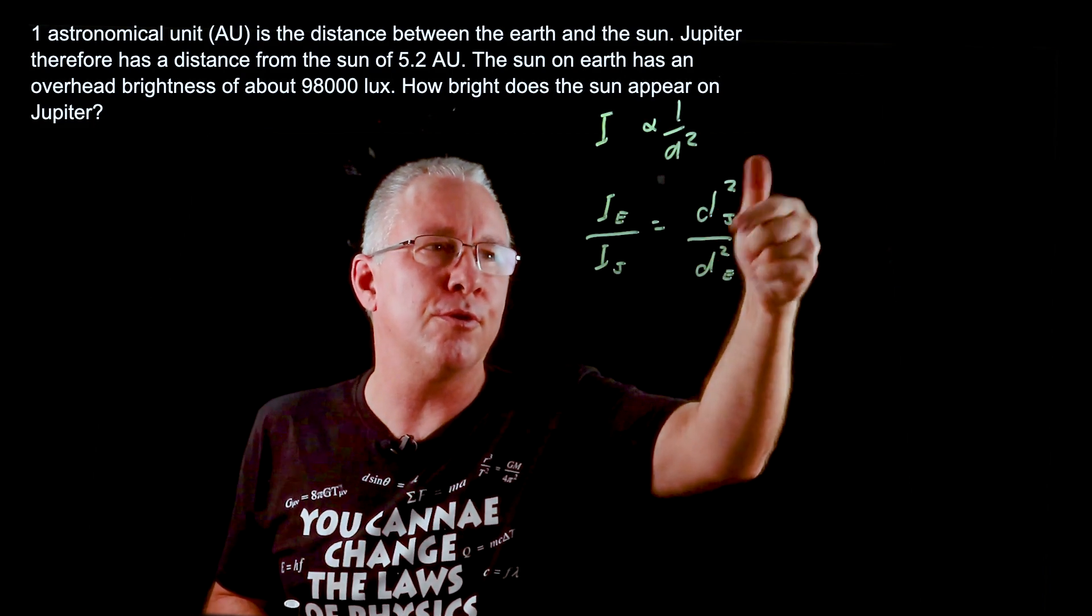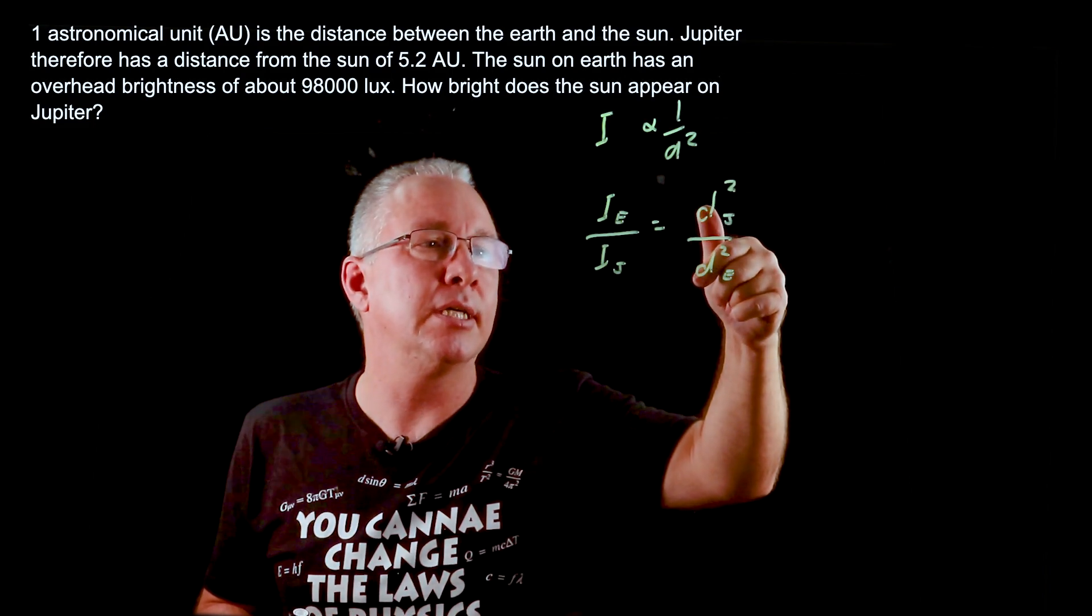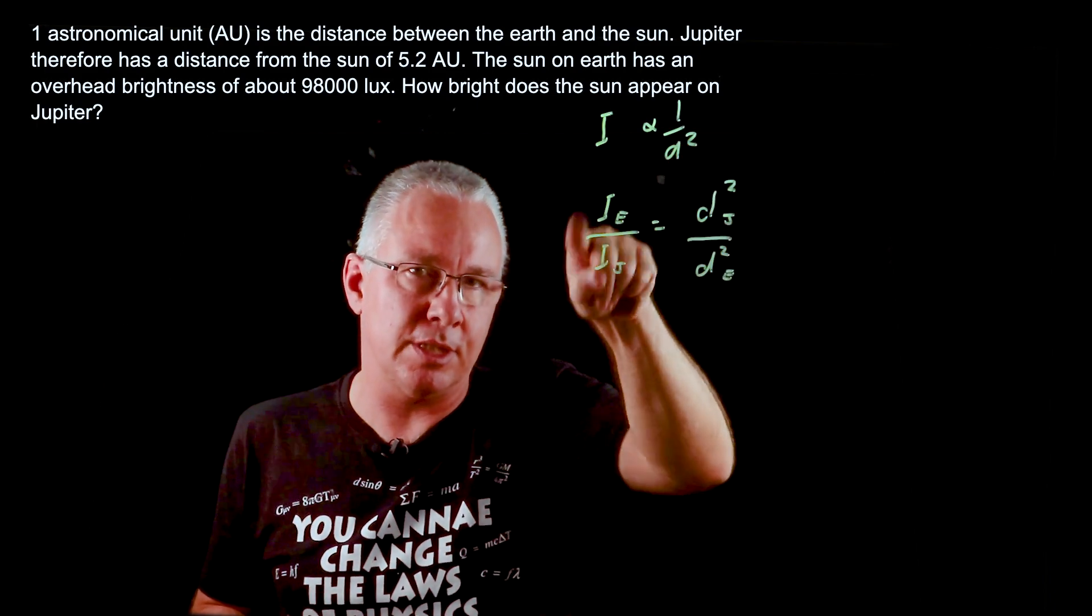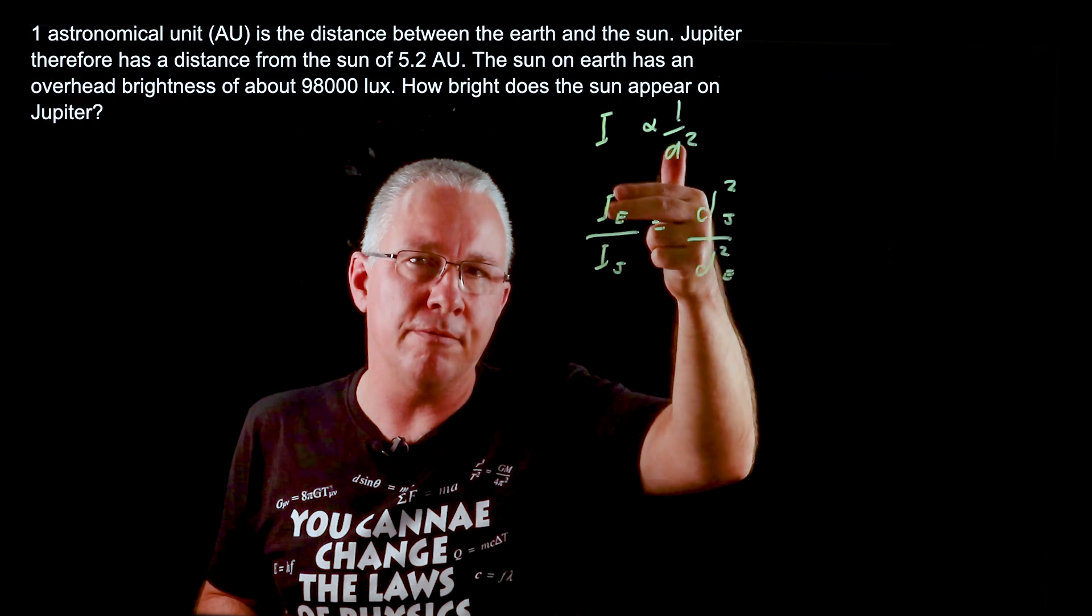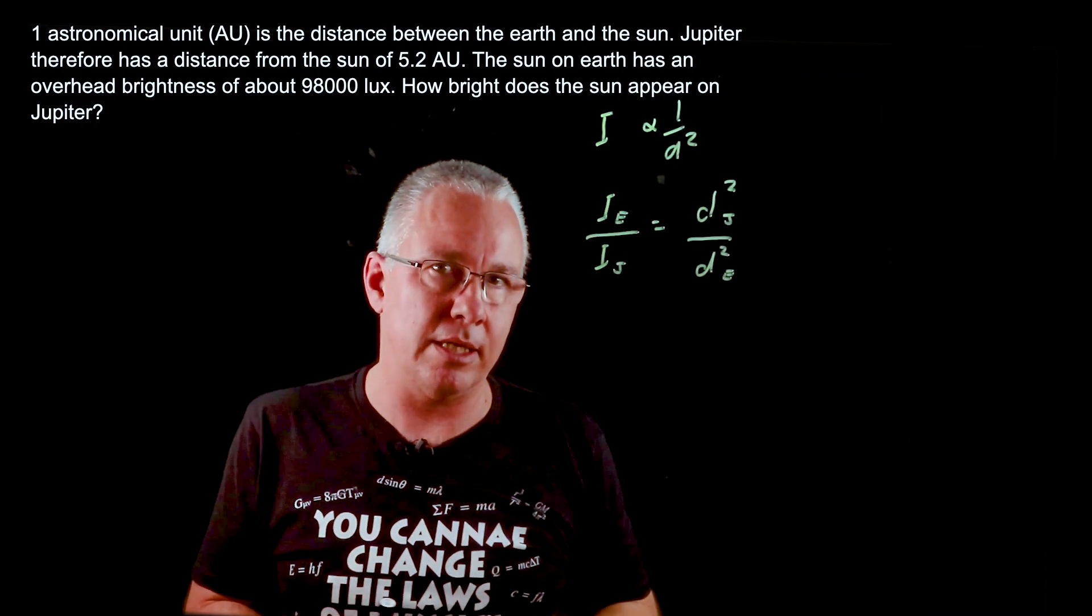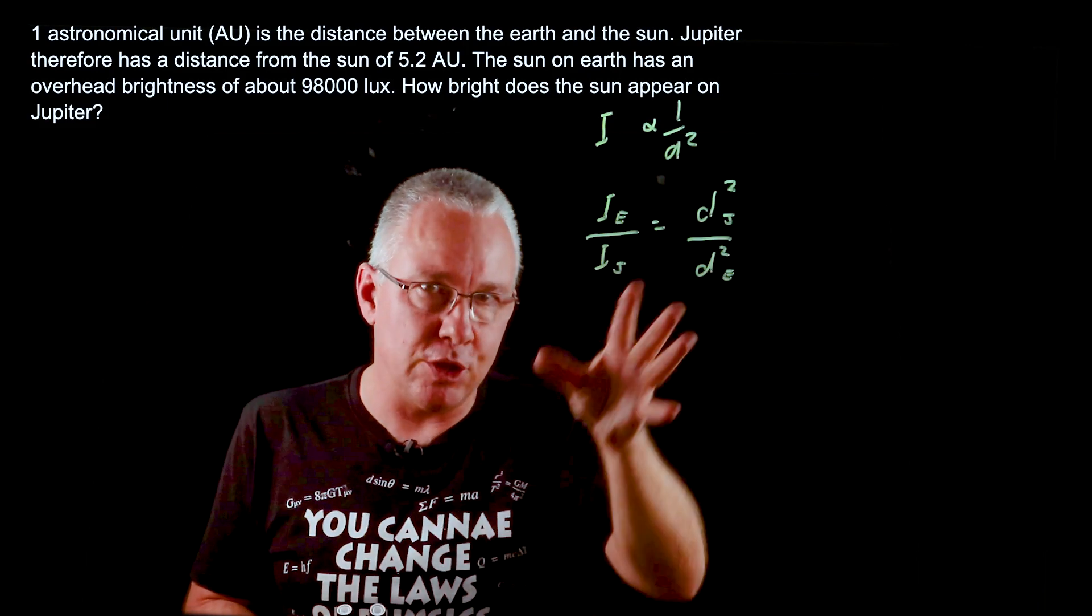That means if Jupiter is further away than the Earth, this value becomes bigger and that makes sense because the intensity at Earth is definitely going to be brighter than the one at Jupiter, but it's an inverse square relationship.